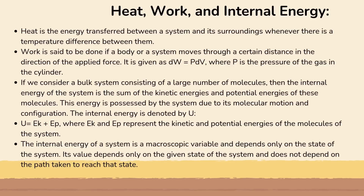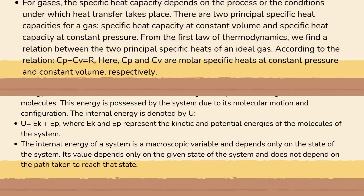The internal energy is denoted by U: U = Ek + Ep, where Ek and Ep represent the kinetic and potential energies of the molecules of the system. The internal energy is a macroscopic variable and depends only on the state of the system — it does not depend on the path taken to reach that state.